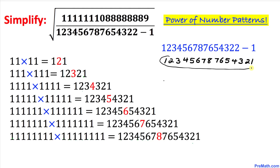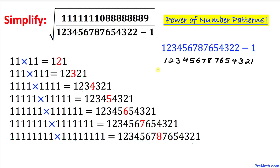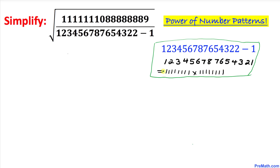Therefore, this denominator number is the same as the product of eight ones times eight ones — that is, 11111111 times 11111111.